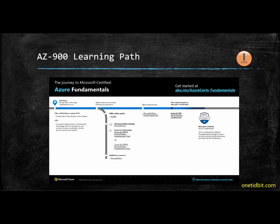Once you complete those self-learning lessons — there are around 13 lessons — go for some instructor-led training. Instructor learning is of two types: you can go to any vendor, or you can participate in the Microsoft Virtual Fundamentals Instructor-Led course, which is free. Once you complete instructor-led training, you can check some websites for sample questions and answers and then appear for the exam.